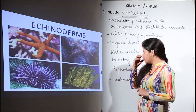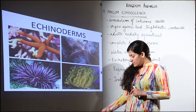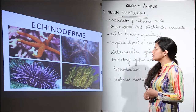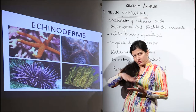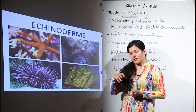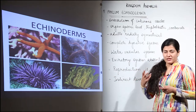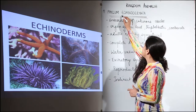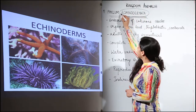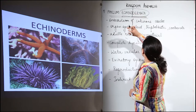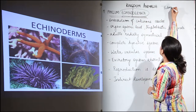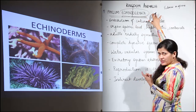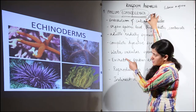A few echinoderms are shown here, and the most typical example is the starfish, which is present in the ocean — near the ocean floor. Now, the name 'Echinodermata' can be broken into two words: 'Echinus' meaning spines, and 'dermata' meaning skin. So echinoderms have spiny skin. These are the examples given.